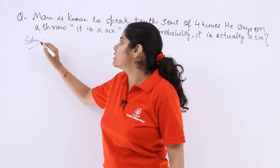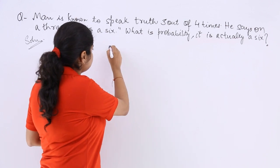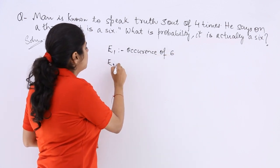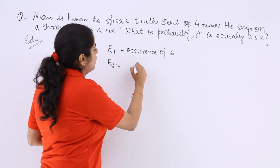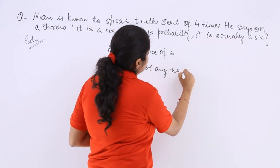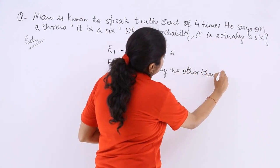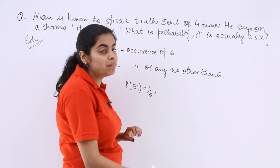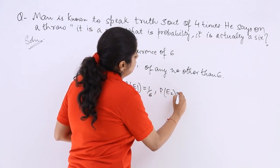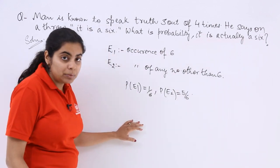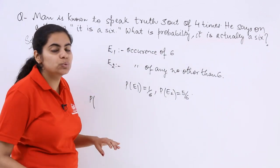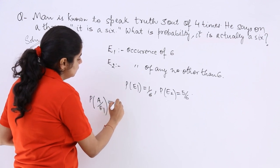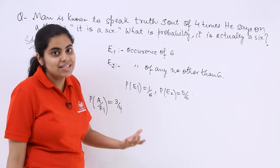Let's write the solution. Let E1 be the occurrence of 6, and let E2 be the occurrence of any number other than 6 on the die. So the probability of E1 is 1/6, because in a die only one outcome out of 6 is a 6. Probability of E2 is 5/6. Now, the probability that he spoke the truth given that 6 has occurred is 3/4, as stated in the question.